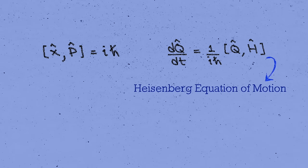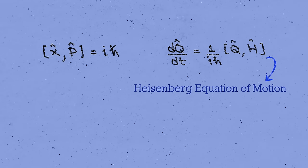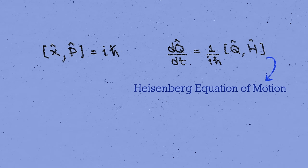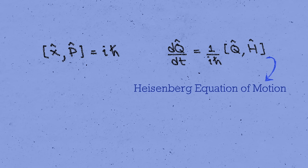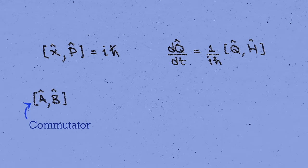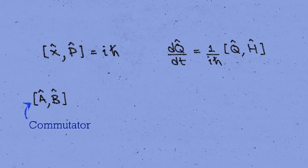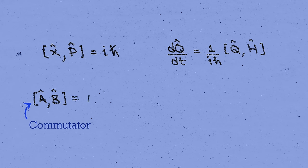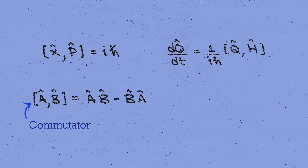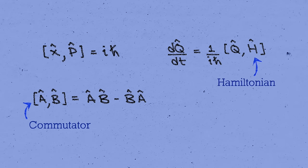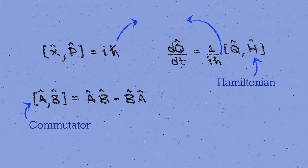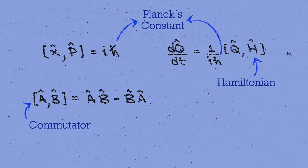The second is called the Heisenberg equation of motion for an operator q. This is what tells us how operators in quantum mechanics change with time. It's equivalent to the Schrodinger equation for states. In both of these equations, the square brackets stand for the commutator, like you might have seen before for matrices. It just means to first act the operators in the forward order, and then subtract the reverse order, ab minus ba. H over here stands for the Hamiltonian operator. And h-bar is Planck's constant, which sets the scale of quantum effects.